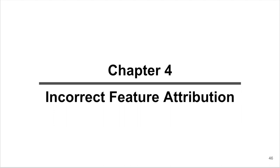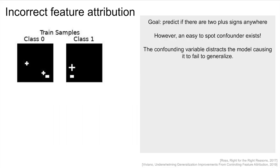This chapter will cover saliency maps and how to ensure that models are right for the right reasons. To illustrate this issue, let's look at a toy example.